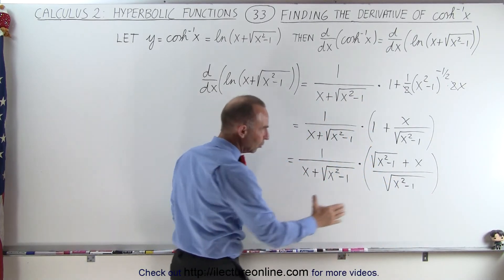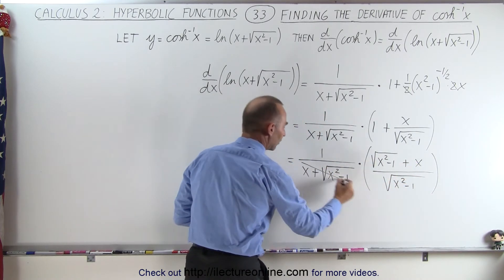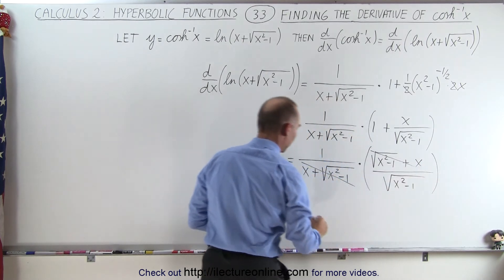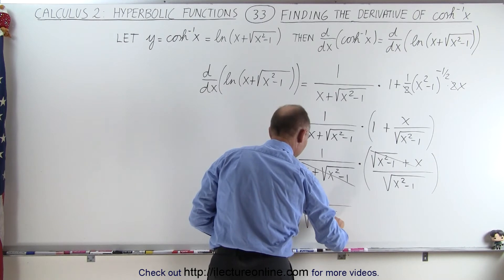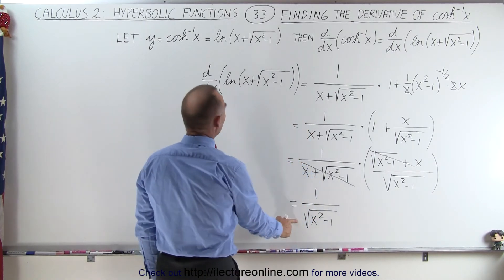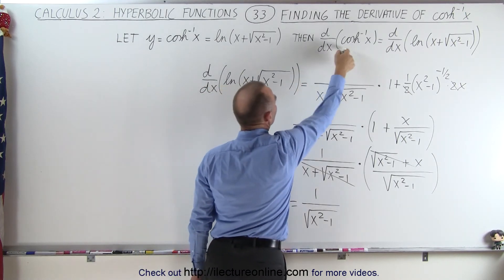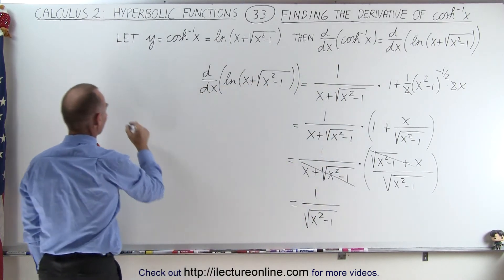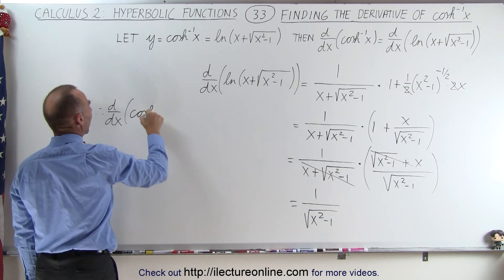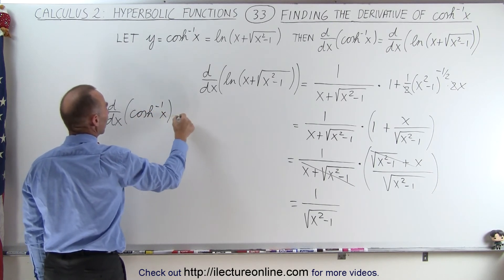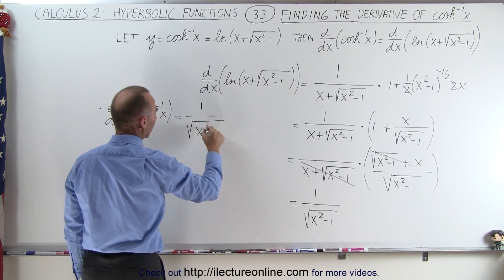Then you realize what's in the numerator here is exactly the same as what's in the denominator there, just in reverse order — so this cancels out with this. That means this is equal to 1 over the square root of x squared minus 1, which is the derivative of the inverse hyperbolic cosine of x.